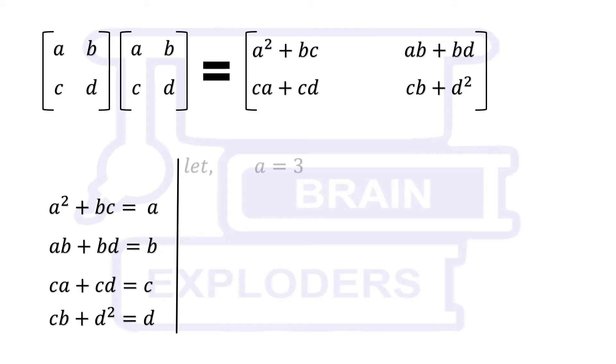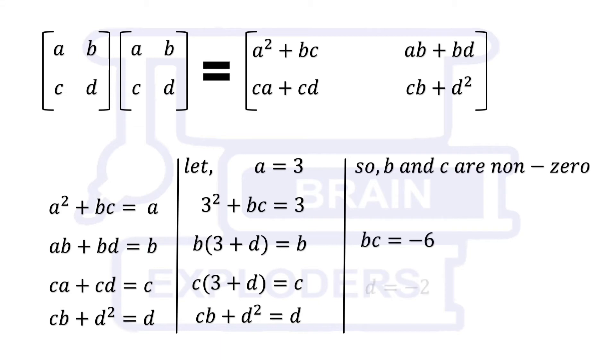Let A is equal to 3. Substitute the value of A in all the equations. BC is not equal to 0, hence B and C both are nonzero and can be cancelled from both sides. We get D equals to minus 2 and BC equals to minus 6.